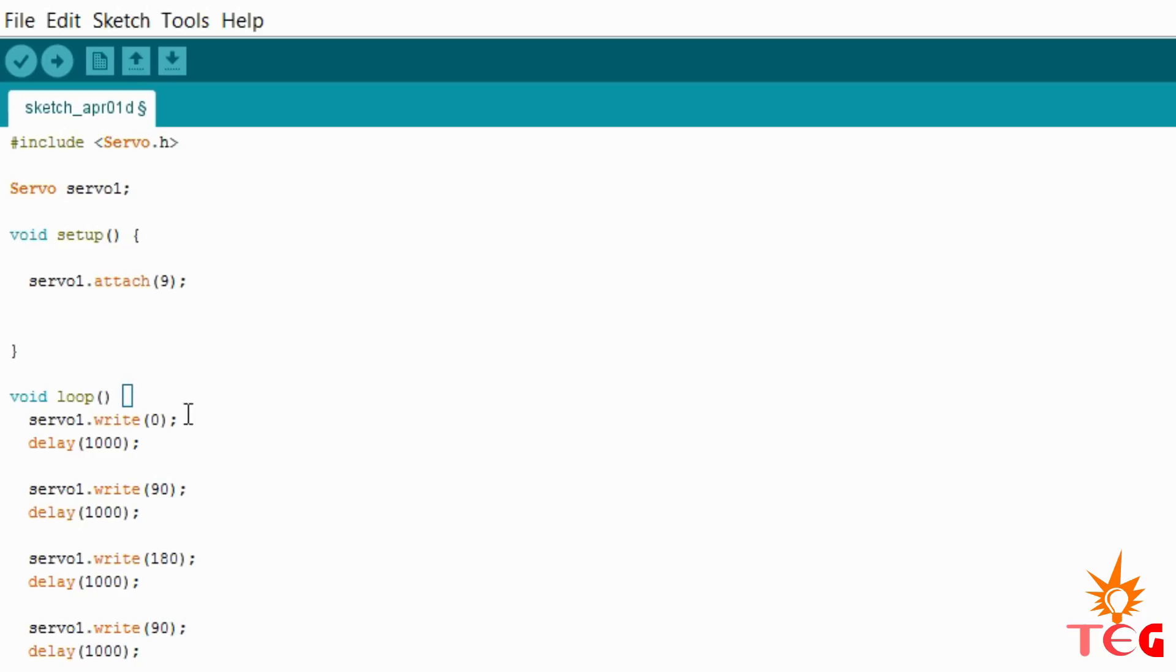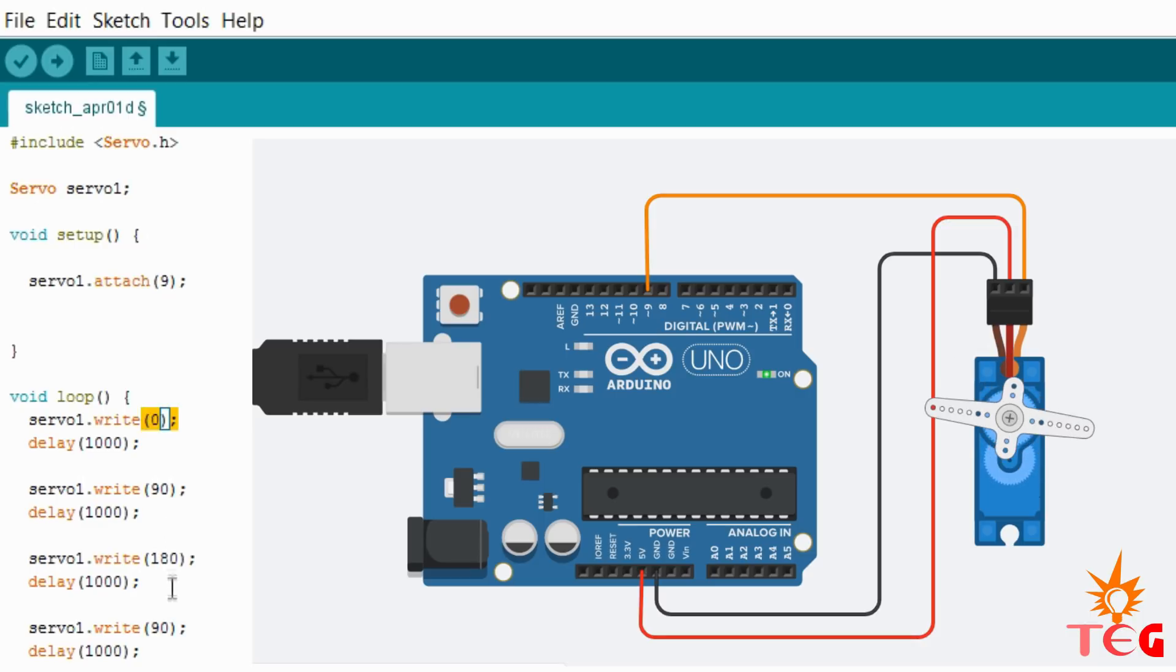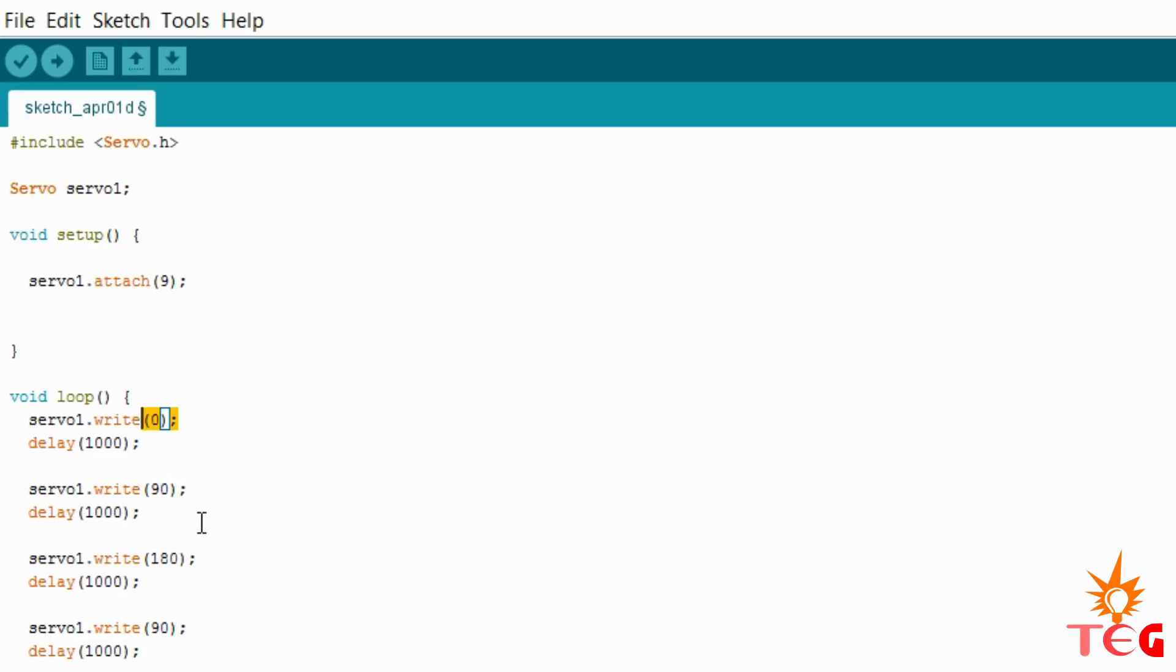Now since this is a void loop, the command written here will keep on running again and again. That means after 90 degree, servo motor will go to 0 degree position and so on. So let's upload this code to Arduino and see what happens.